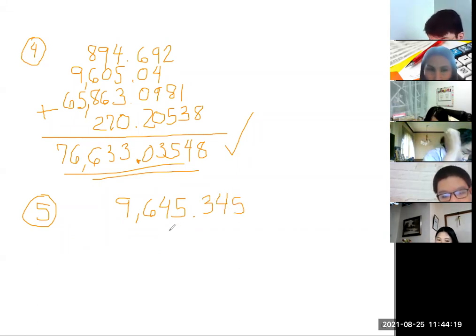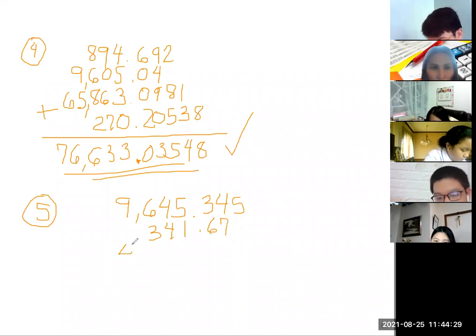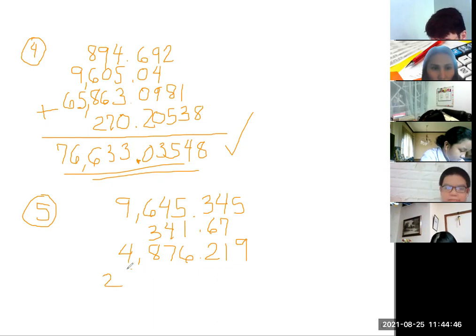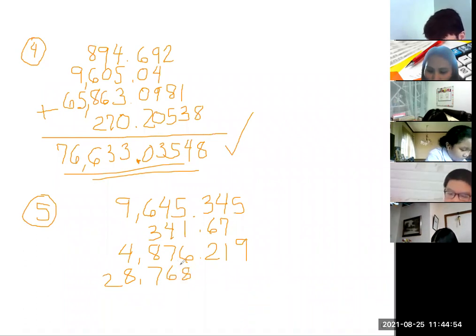Let's start with addition. 345, next 341 and 67, add that to 4876 and 290,000 plus 28,768 and 23.